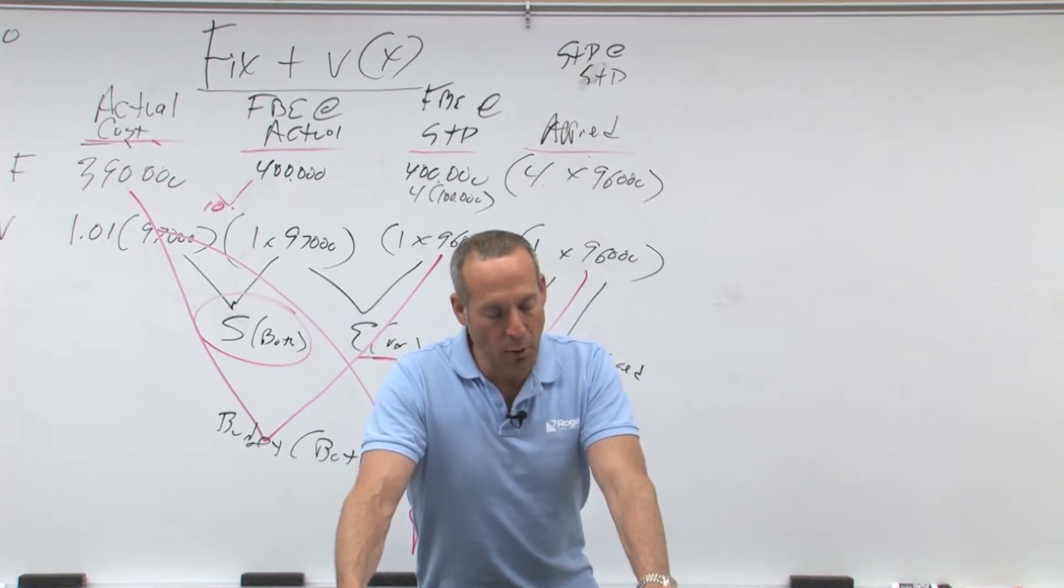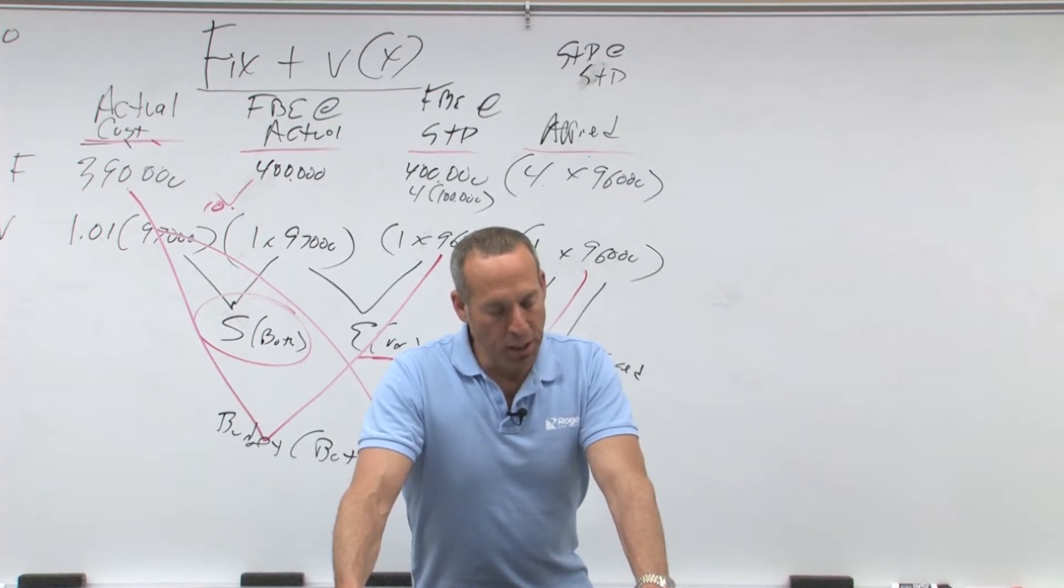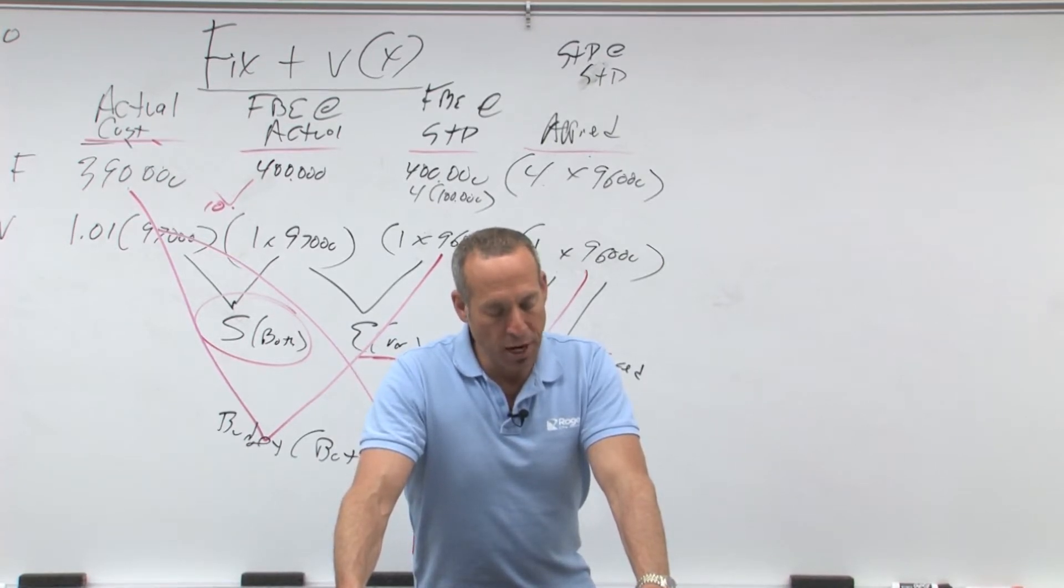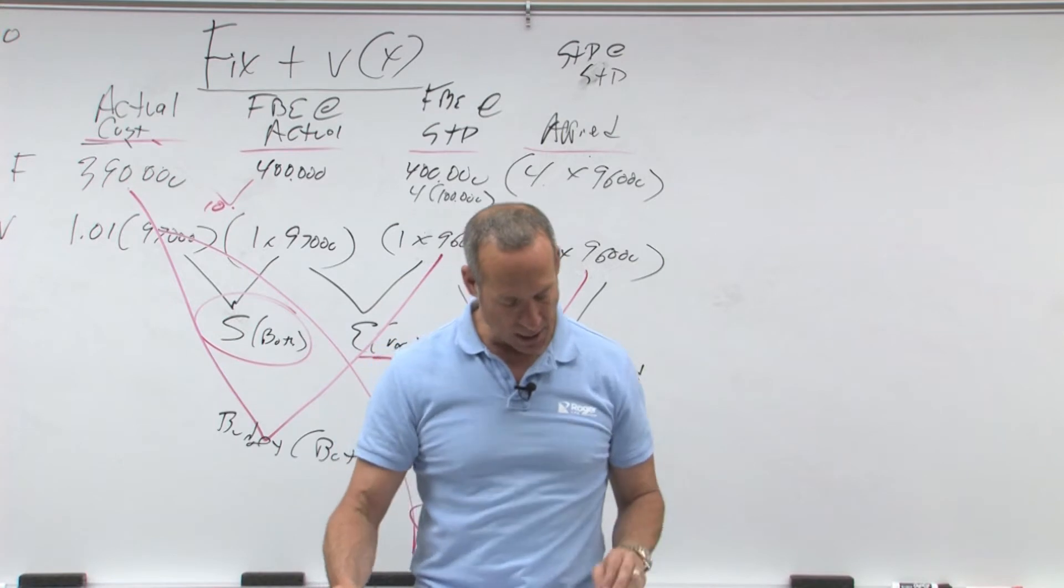Overhead applied equals standard direct labor hours times predetermined overhead rate. In the formula above, predetermined overhead rate (POHR), including both variable and fixed, is calculated in three steps, a three-step process.